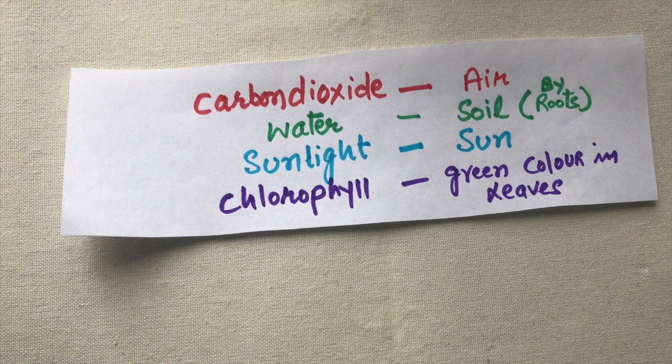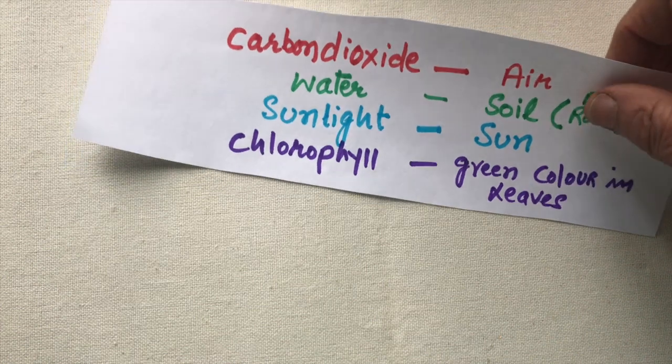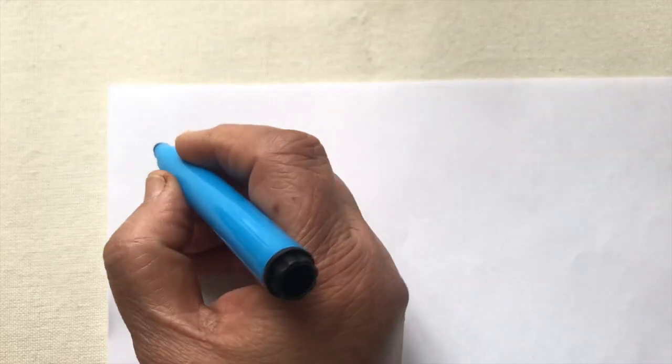Chlorophyll is the green color of the leaves — the green color of the leaves is due to chlorophyll, which means chlorophyll is present in the leaves. Now, from all these, plants manufacture their own food, and from this we get photosynthesis.